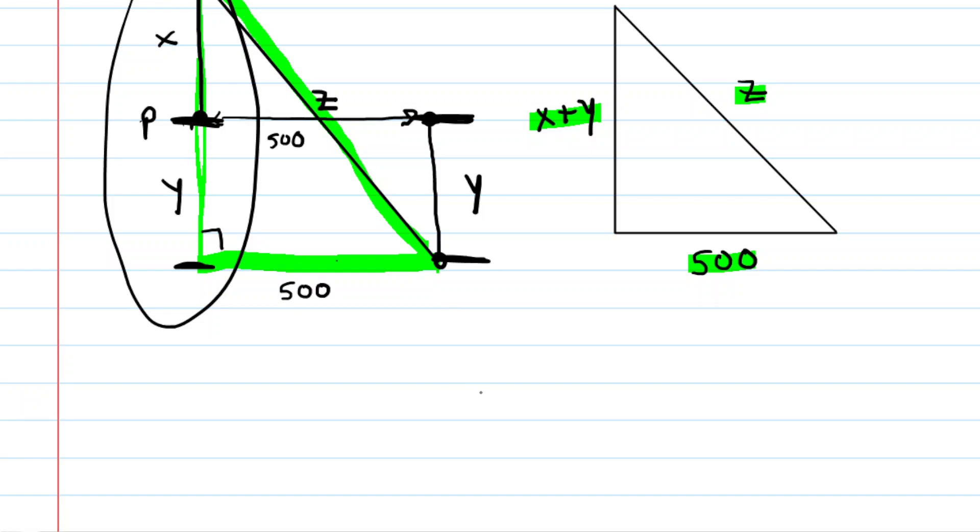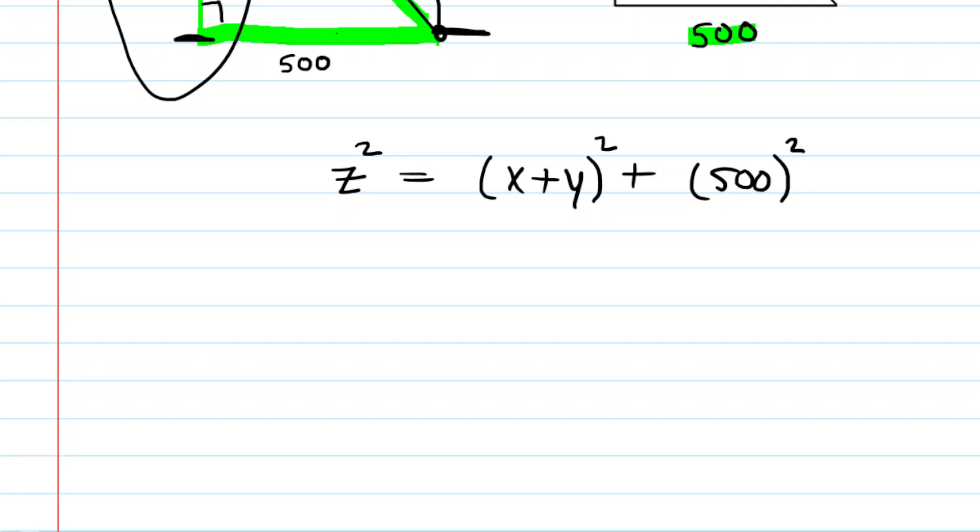So that's what we're going to do next, is use the Pythagorean theorem. We would know that the hypotenuse squared would equal the sum of the legs squared. So we would have Z² = (X + Y)² + 500². Now, once you have your equation set up, what you need to do next is differentiate this equation with respect to time. And so we know that because this is a related rates problem, we have people moving at different rates. We're asked to calculate a rate of change in the distance between the people.